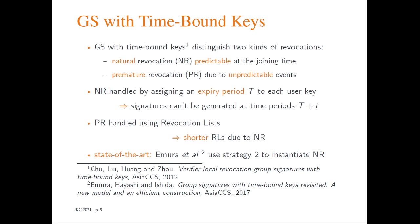There is also premature revocation due to unpredictable events. Natural revocation is handled by assigning an expiry period to each user key, meaning group signatures cannot be generated with that key after this time period. Premature revocation is dealt with using a revocation list, as in strategy 3. The key insight is that when natural revocation represents the largest part of revocations, the revocation lists will be much shorter, leading to a more efficient verification process. The current state of the art is a scheme by Emura et al. that uses revocation strategy 2 to instantiate natural revocation.